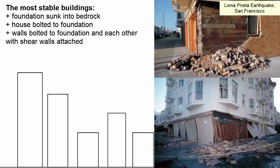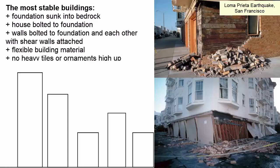If the walls of the house are bolted to the foundation, they'll move with the foundation. If the walls are bolted to each other, it further connects everything so it all moves as one. If we build houses out of flexible material like wood, they're less likely to break as they bend. If we minimize the use of rock tiles and ornamental door headers, we're less likely to have these fall and cause damage during an earthquake.